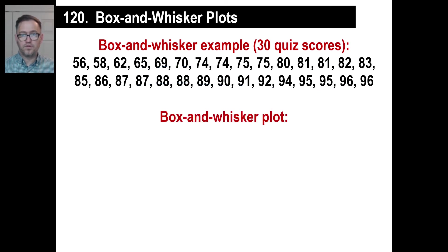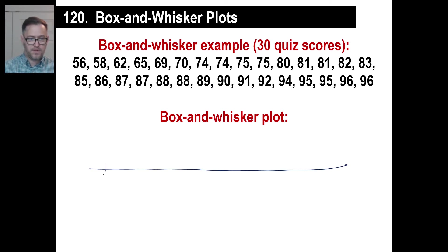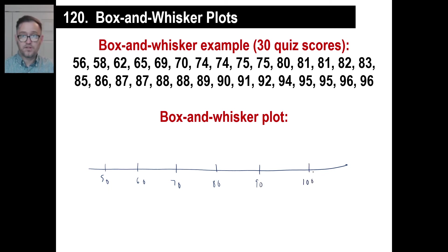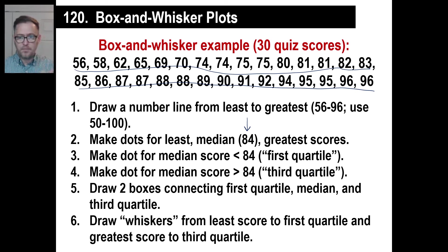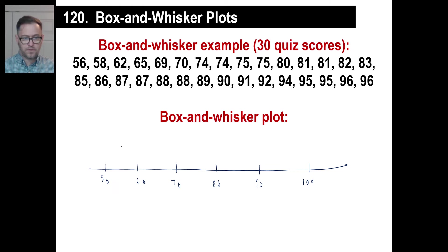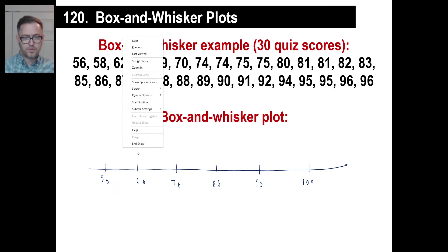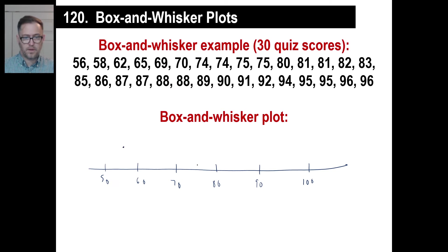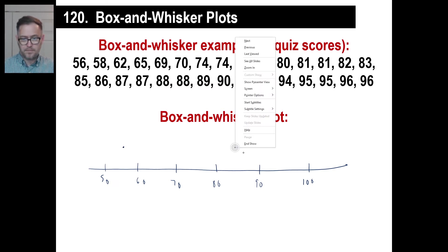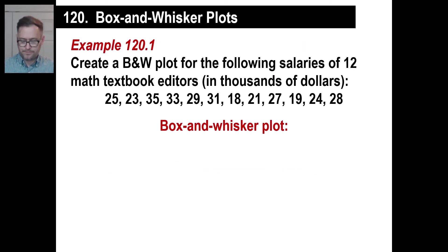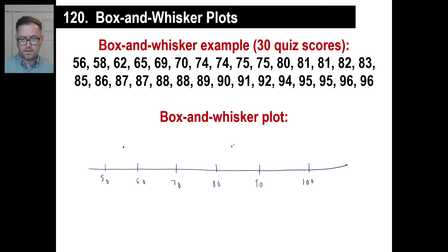Let's go back first — draw a number line from least to greatest, we'll use 50 to 100. We'll call this 50, then 60, then 70. It doesn't have to look perfect — do the best you can. Second thing, we're going to make dots for the least, the median, and the greatest scores. The least score is 56, we'll put it about right there. 84 is the median — there we go. And our 96 is the greatest score — we'll call it right about there.